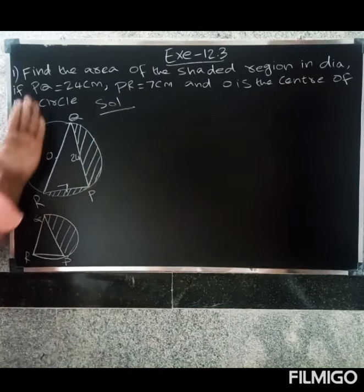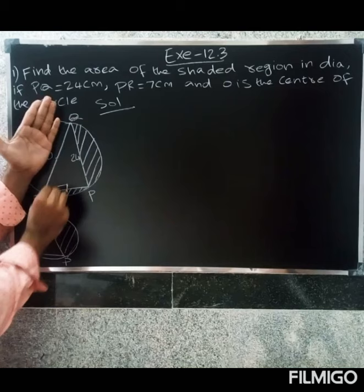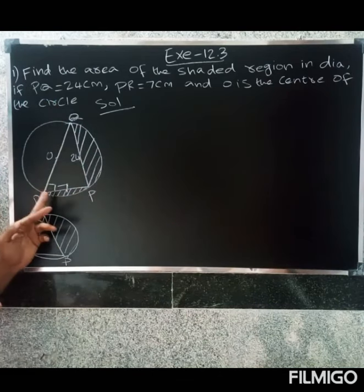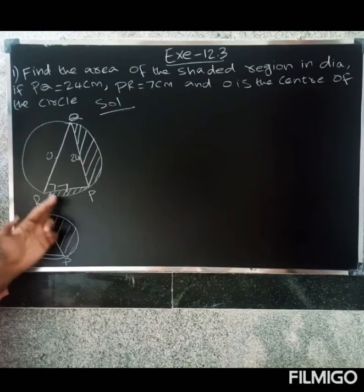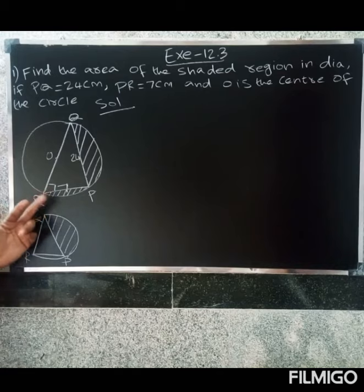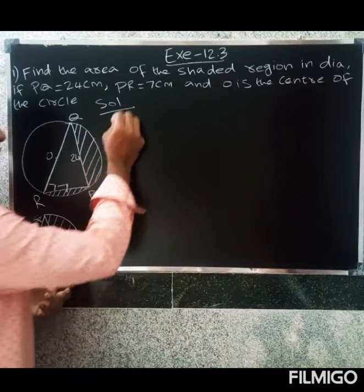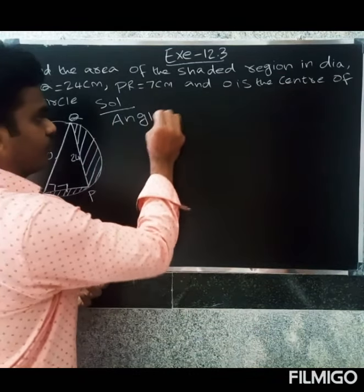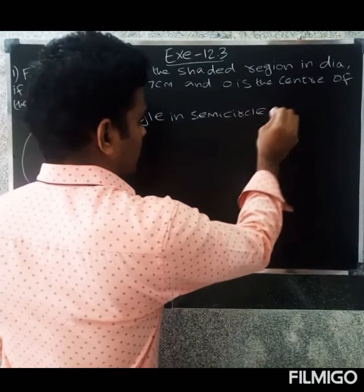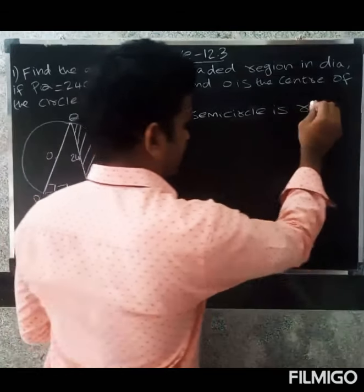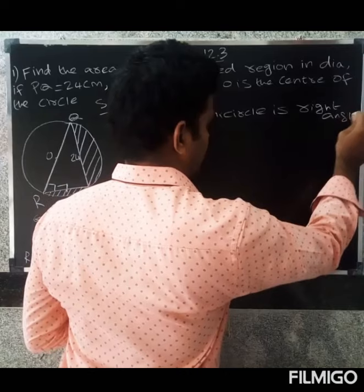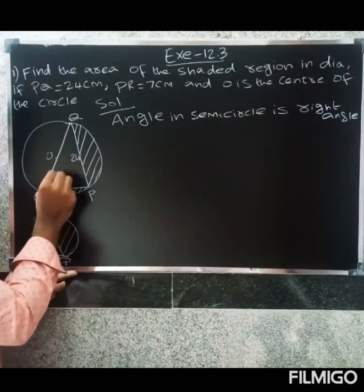In the semicircle QR, the angle is important. The semicircle angle is 90 degrees. The angle in a semicircle is a right angle - another 90 degrees.